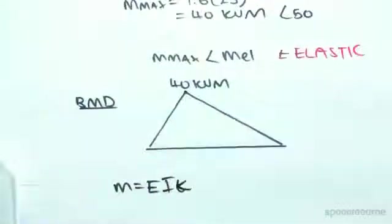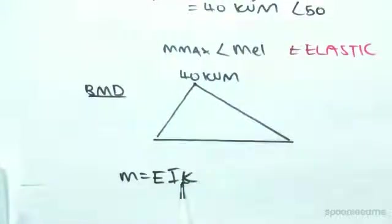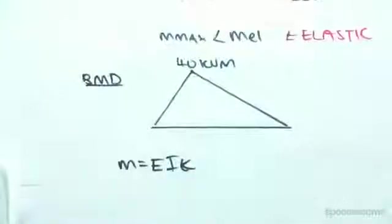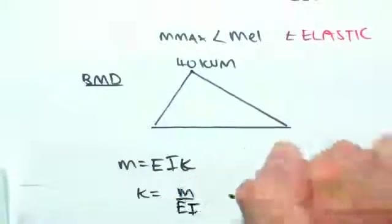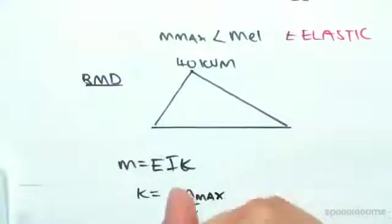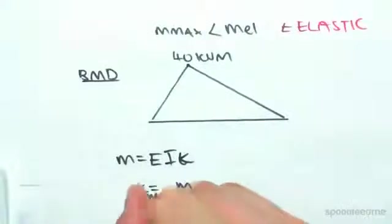And because we're in the elastic range, we're allowed to use the formula M equals EI kappa. And as you can see, EI is a constant. E and I are both constants, which means, and because M is linear, it means kappa is also going to be linear. So we're going to solve for kappa, which will equal M on EI.